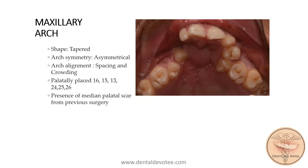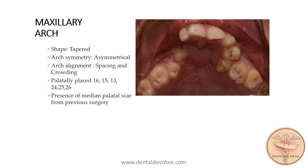His maxillary arch shape was tapered. It was asymmetrical and spacing as well as crowding was present on the arch. Teeth 1-6, 1-5, 1-3 were palatally placed, and 2-4, 2-5, 2-6 were also palatally placed, with presence of median palatal scars from previous surgery.